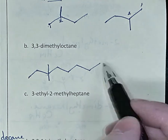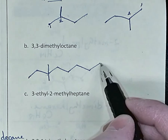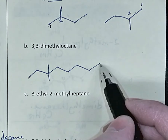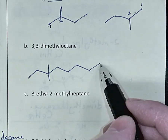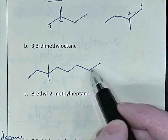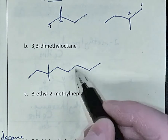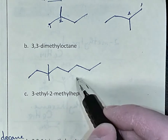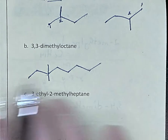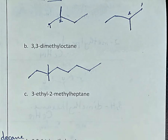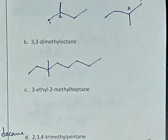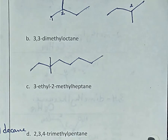If you numbered from the other side, that would be perfectly acceptable — you could go 1, 2, 3, and draw the two methyls there. It would be the same molecule, just flipped over, so either one of those would be fine.